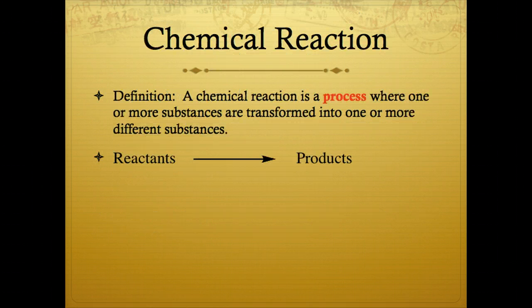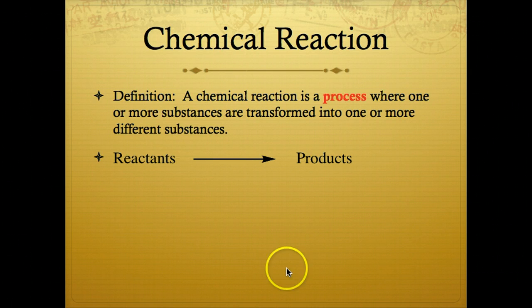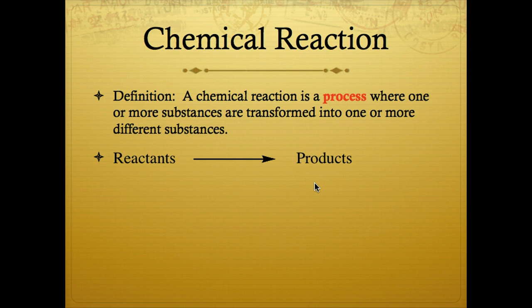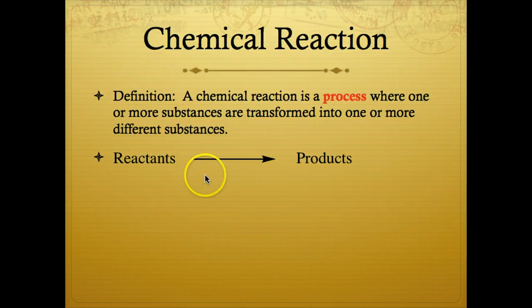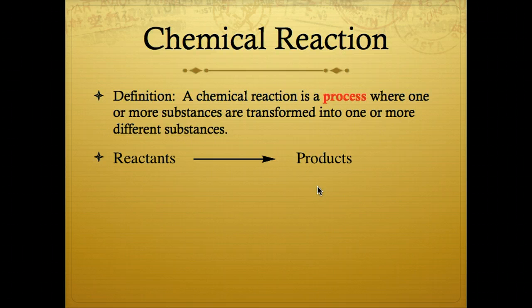A chemical reaction is a process where one or more substances are transformed into one or more different substances. We have reactants and they're going to form products. The initial substances we call reactants, and they're transformed into other substances known as products. Remember, a chemical reaction is a process by which reactants turn into products.